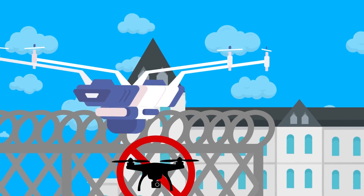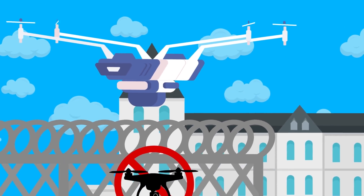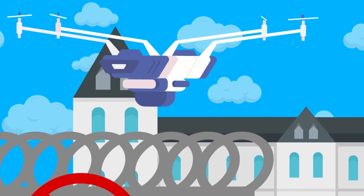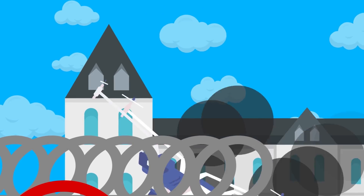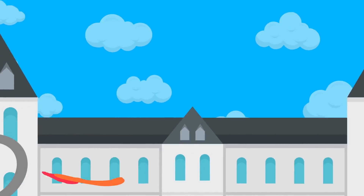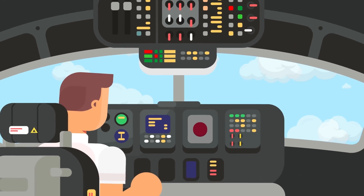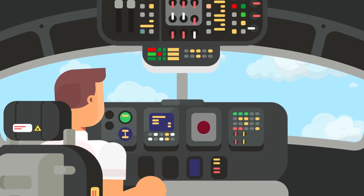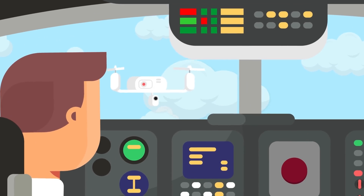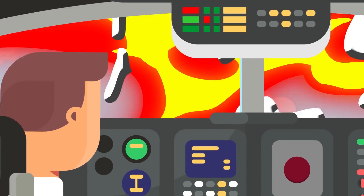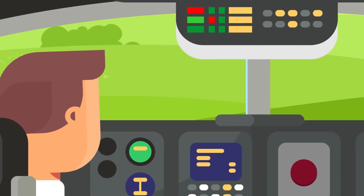In peacetime, no-fly zones can also be set up to limit or prevent the use of drones near sensitive installations, such as airports, observatories, or high-rise buildings, where a wandering drone could cause a serious mishap.